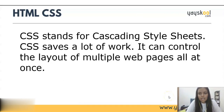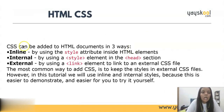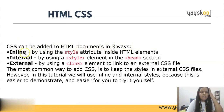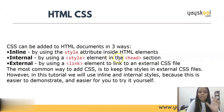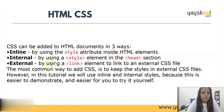There are three ways in which we can add CSS into an HTML document. First is inline — by using the style attribute inside an HTML element. Second is internal — by using a style element in the head section. Third is external — by using a link element to link to an external CSS file.